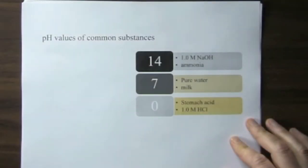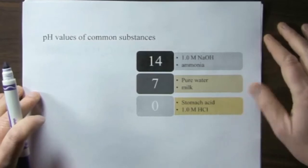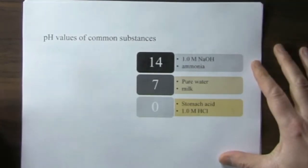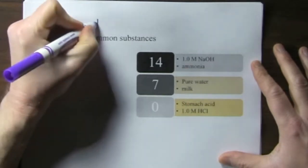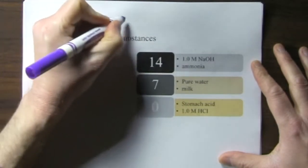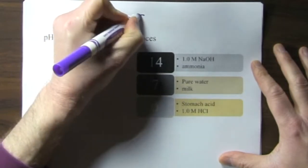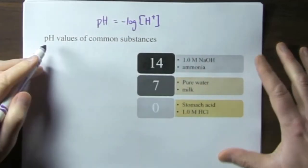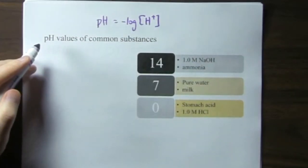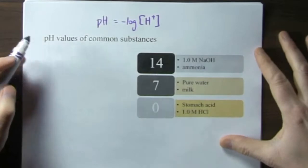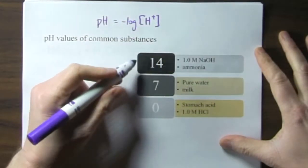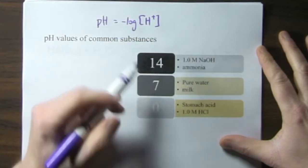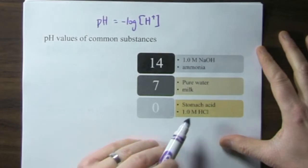So how do we measure the strengths of acids? Well one common way is to look at the pH. pH is the negative log of the hydronium ion concentration, the power of the hydrogen. And in water the scale ranges from 0 to 14, and we have some examples here.